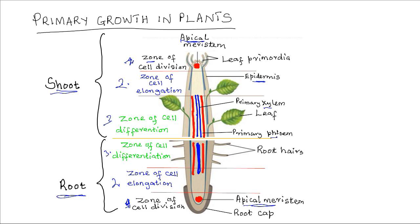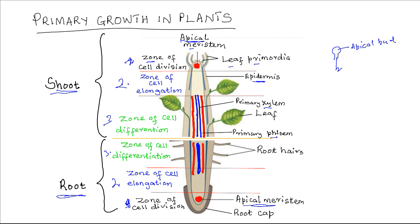At the zone of cell division, located at the extreme tip, cells actively divide by mitosis. In the shoot, this zone contains the apical meristem, which is protected by a tight cluster of leaf primordia — these are immature leaves that in appearance form the apical bud. So in plants, the apical bud represents a cluster of primordial cells beneath which the apical meristem is found, where cells undergo active division.